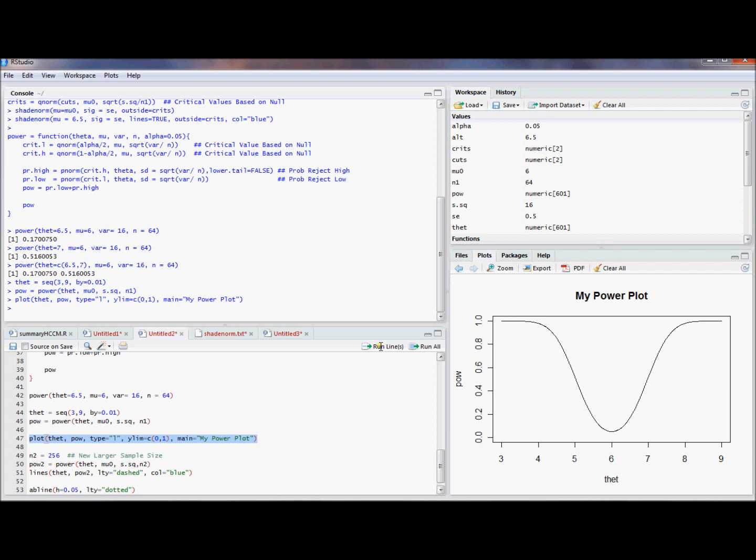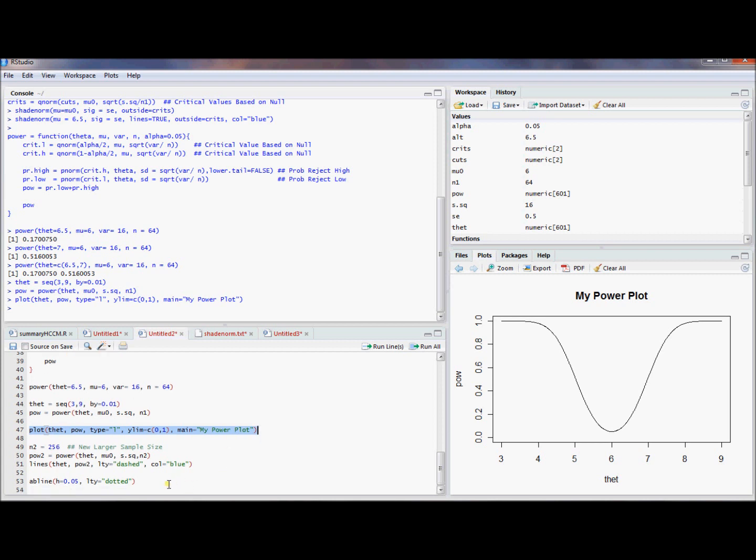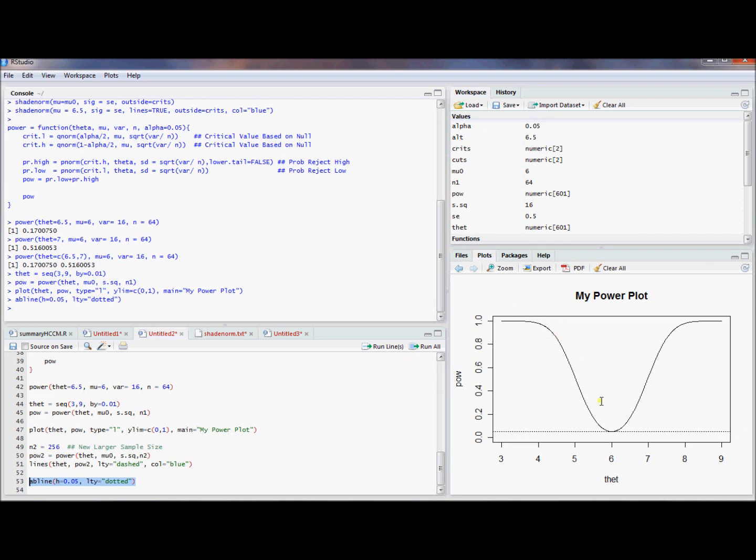It shows you how the power depends on the value of our alternative hypothesis. If our alternative hypothesis is 3, we're almost surely going to reject if that's the truth. If the alternative hypothesis was 6, that's the same as the null hypothesis. So we should be able to reject that at only 5% of the time. Because that's how we set up our null hypothesis. So to show you this, let's just plot a horizontal line using the AB line command. In fact, this power function actually minimizes right there at 0.05.